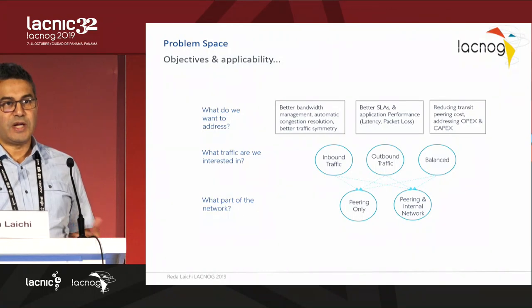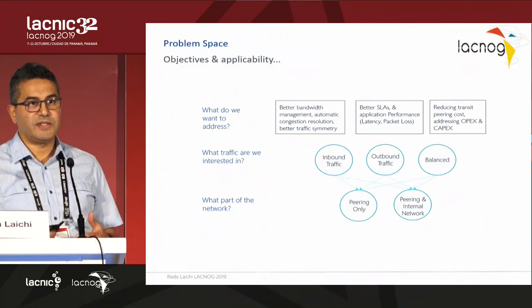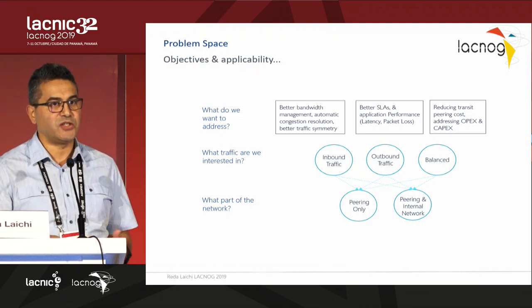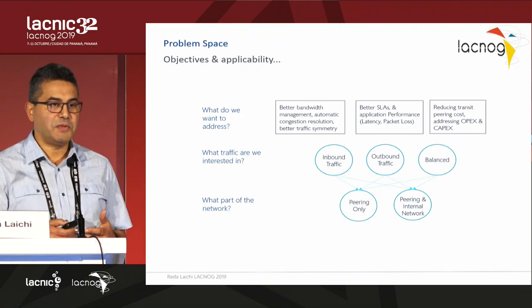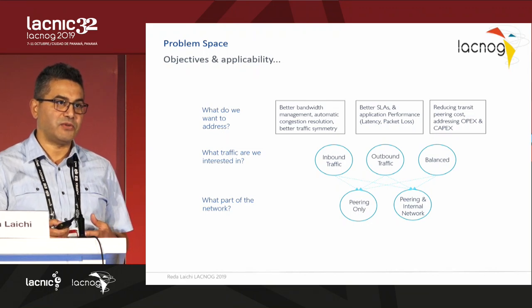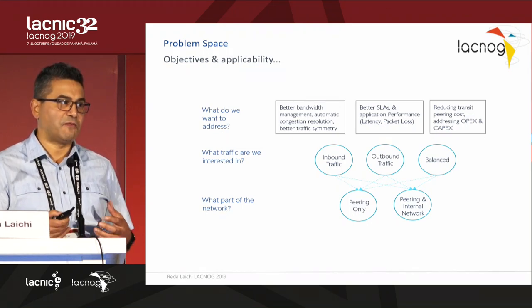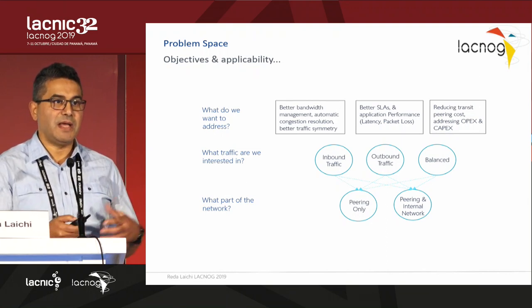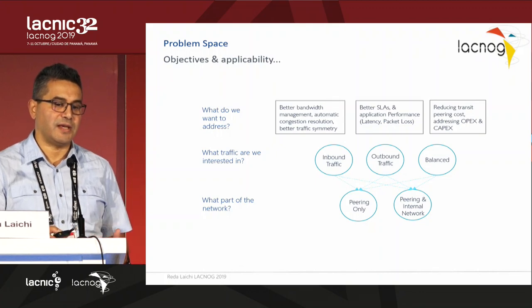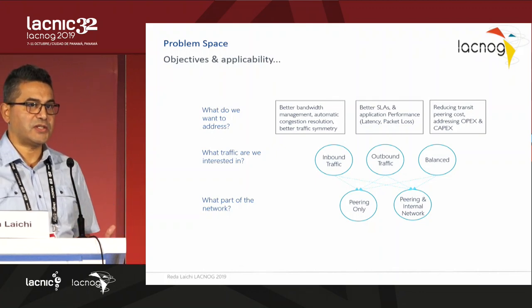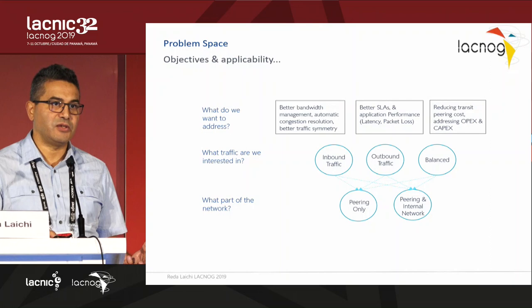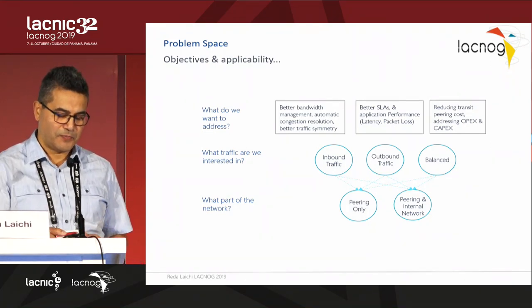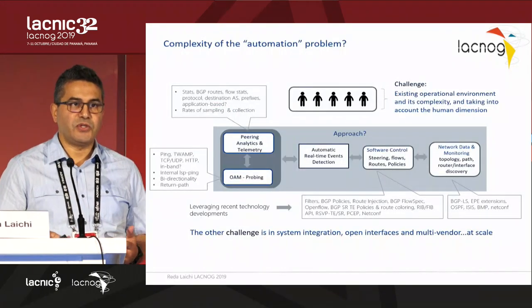So what are the objectives, what does the business need to be able to do? The classical needs are bandwidth management and resource management, but also offering better SLA, having applications function because latency and performance are key for certain applications, and potentially leading to CAPEX or OPEX savings. What we need to address that includes ingress and peering use cases, as well as touching several different networks.